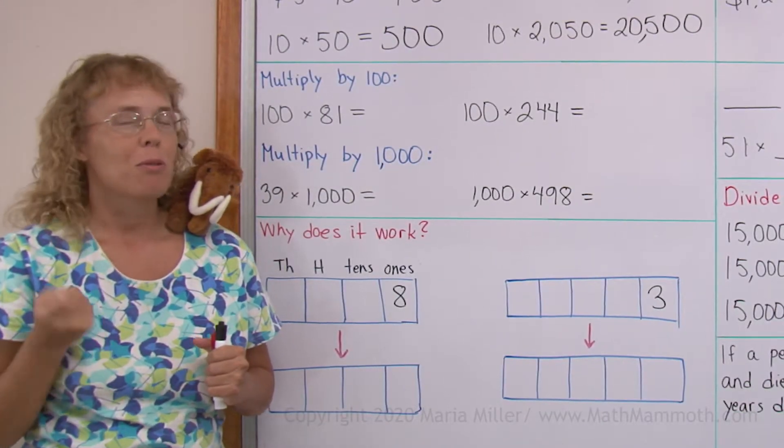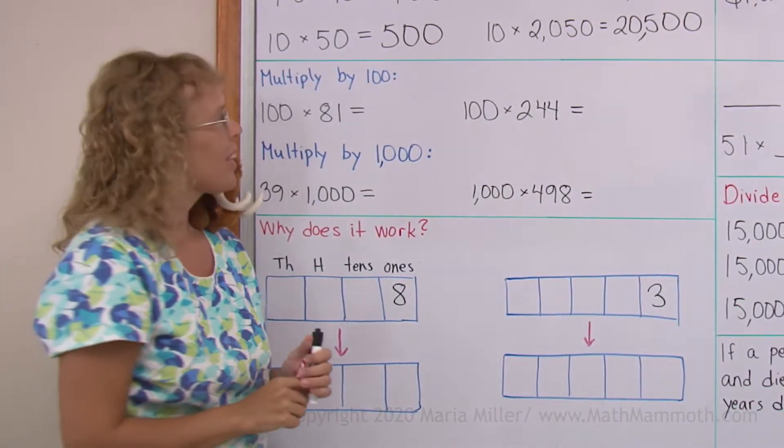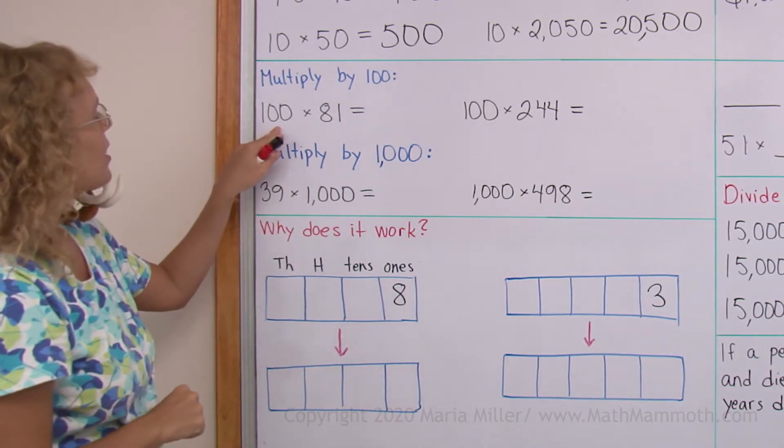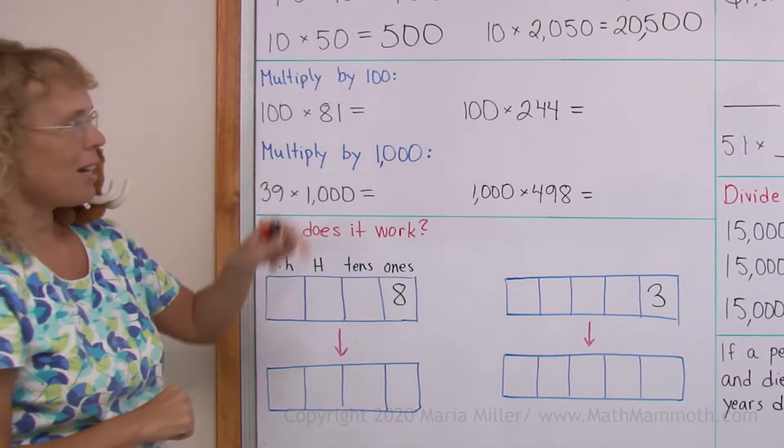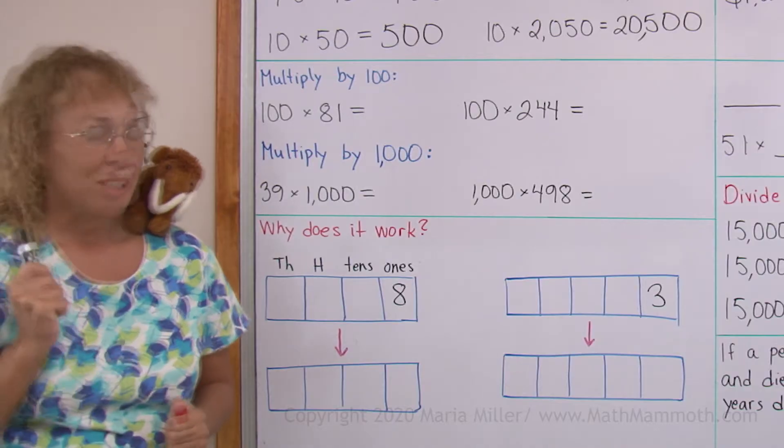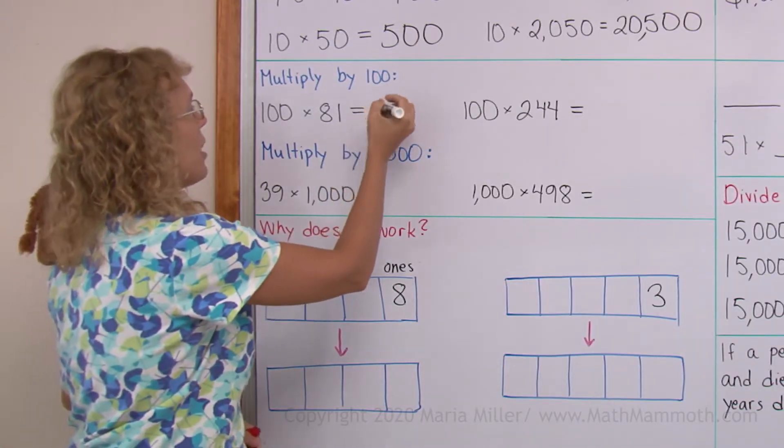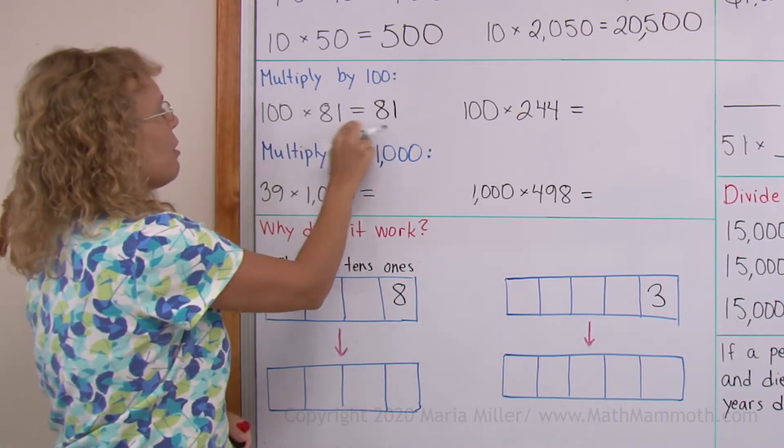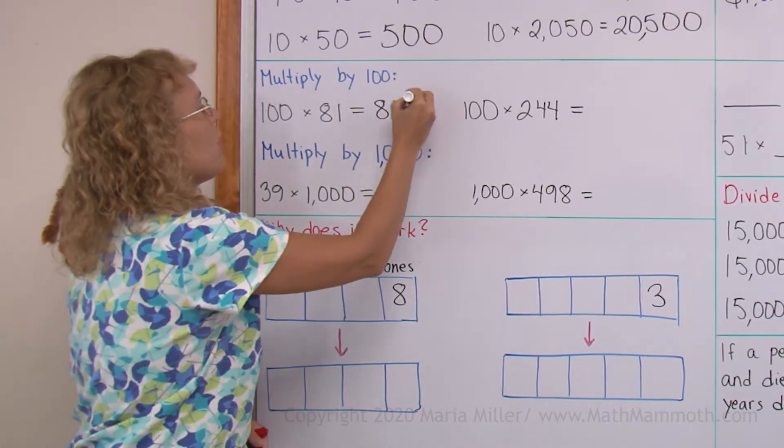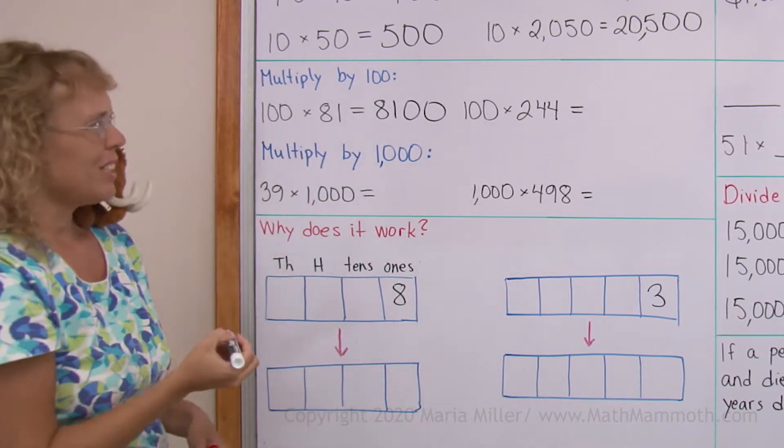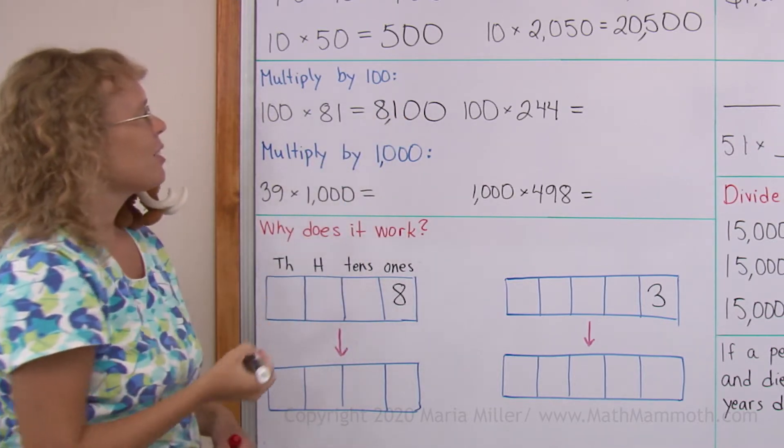Let's try the same now, where we multiply by 100. Okay, here's 100 times 81. Can you guess what the shortcut will be for 100? It's going to be that you write the number, the 81, not the 100, but the 81. And write two zeros after it. Okay, that's easy too. 8,100.